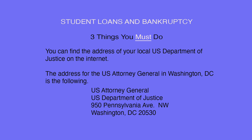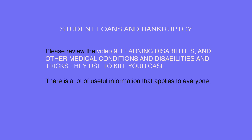You can find the address of your local U.S. Department of Justice on the internet. The address for the U.S. Attorney General in Washington D.C. is: U.S. Attorney General, U.S. Department of Justice, 950 Pennsylvania Avenue NW, Washington D.C. 20530. Please review Video 9, Learning Disabilities and Other Medical Conditions and Disabilities and Tricks They Use to Kill Your Case — there is a lot of useful information that applies to everyone.